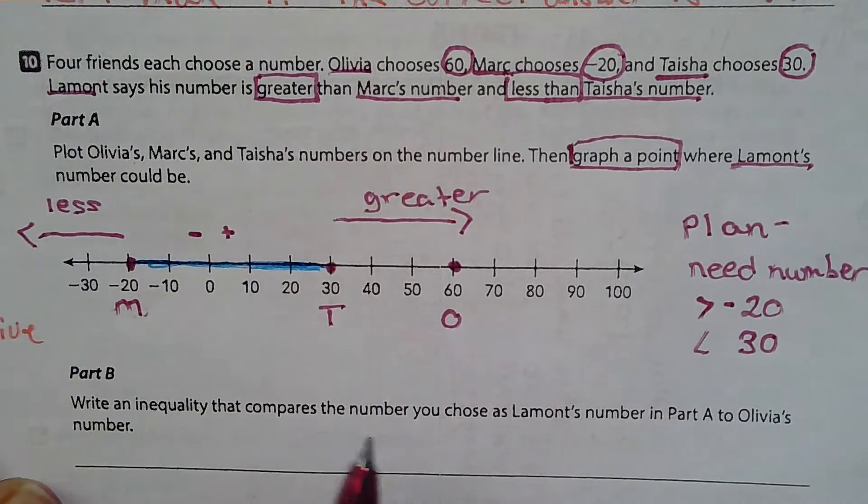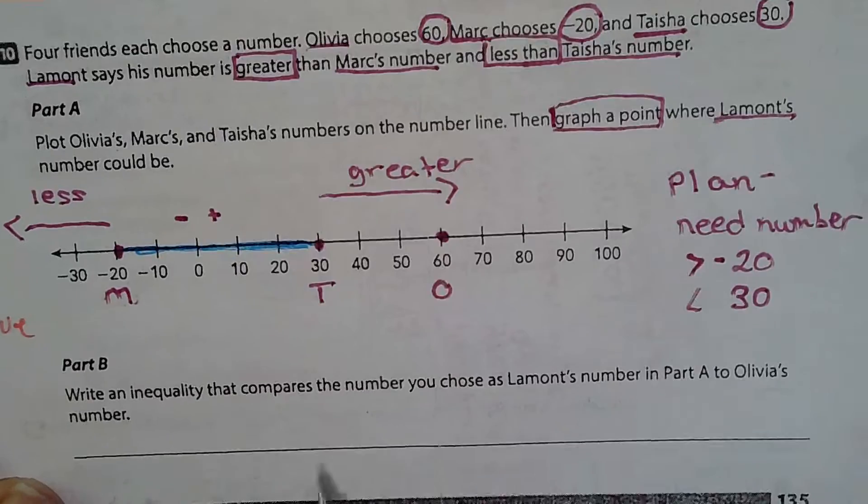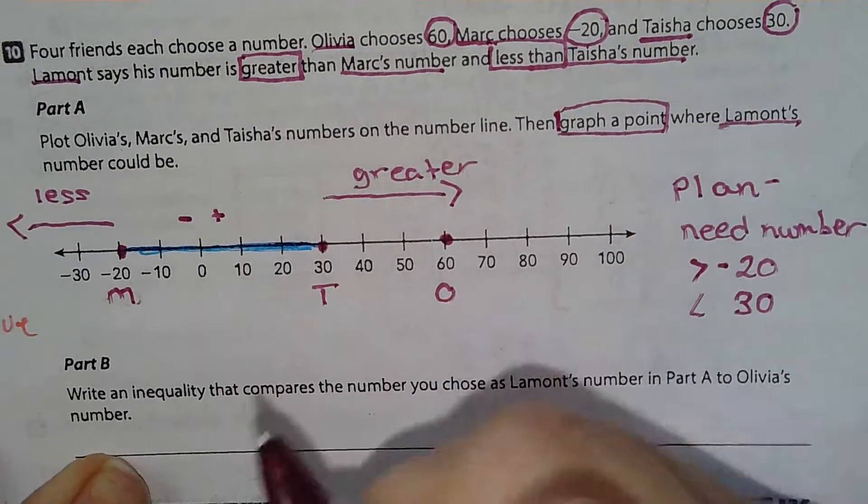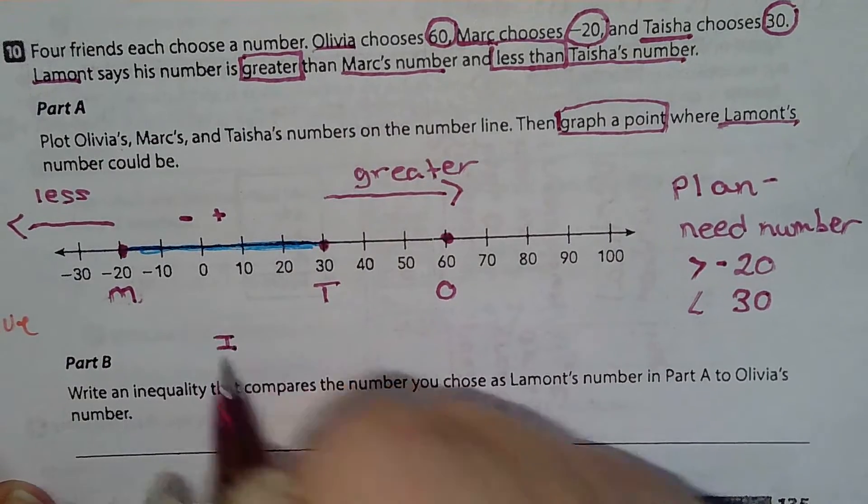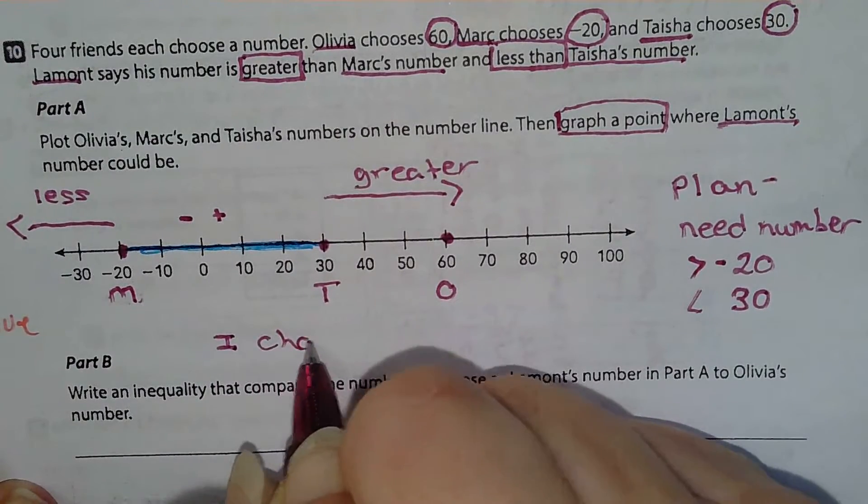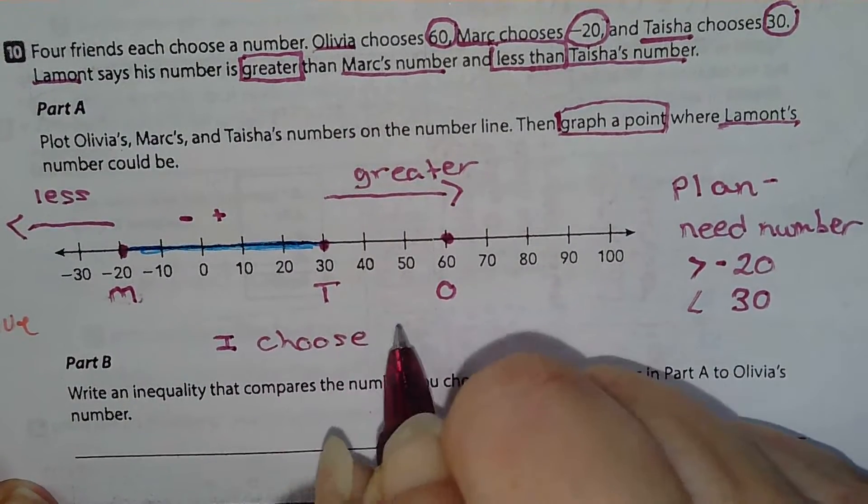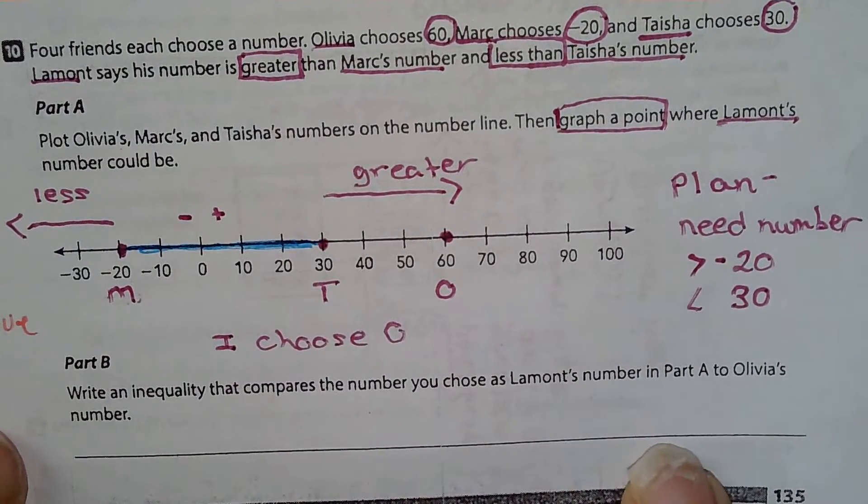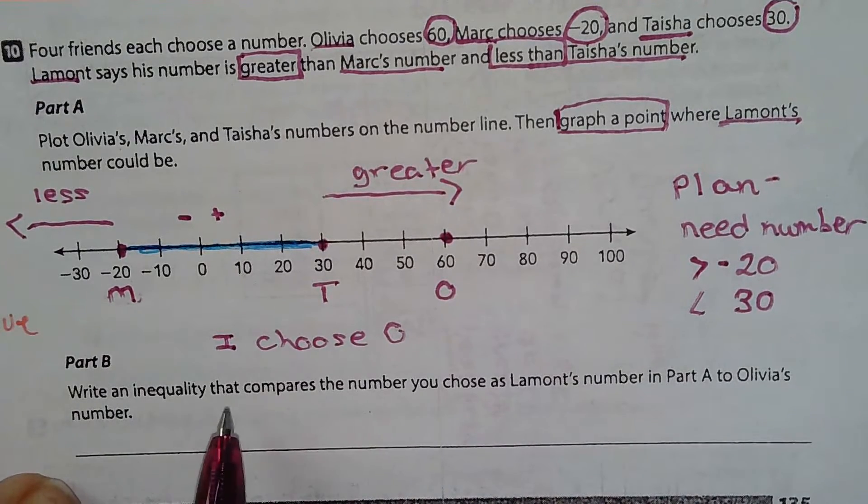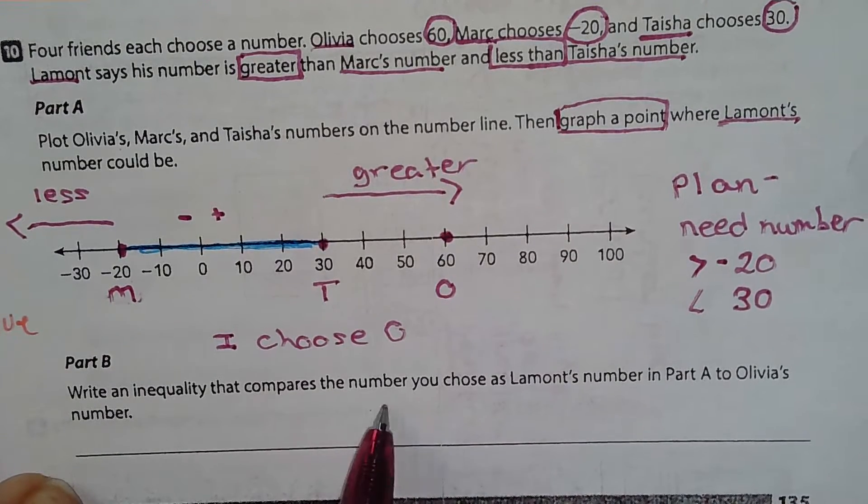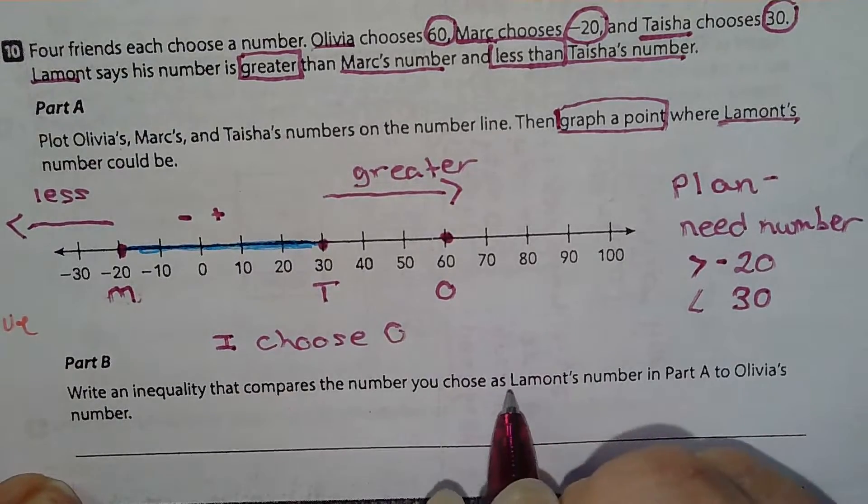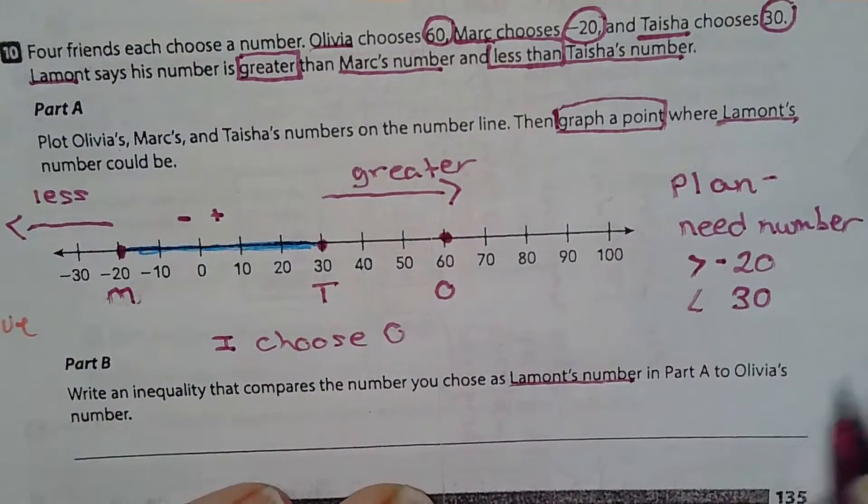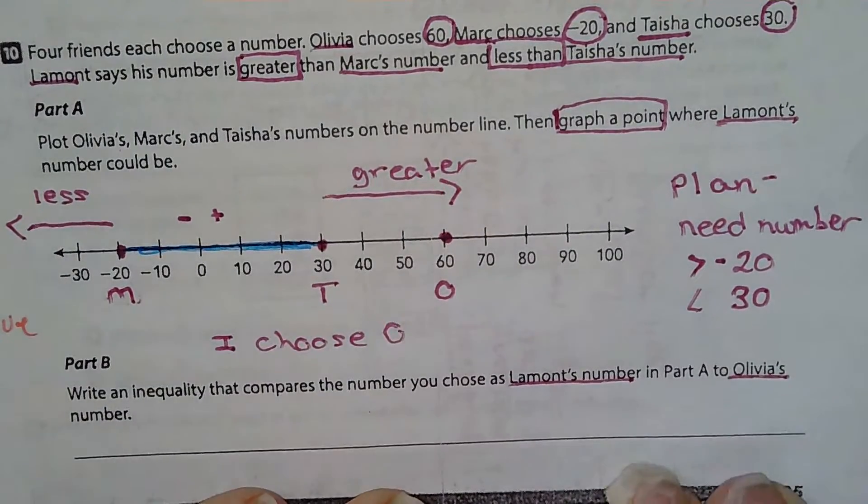Write an inequality that compares the number you chose. I'm going to choose zero. Now, it says write an inequality that compares the number you chose as Lamont's number in Part A to Olivia's number.